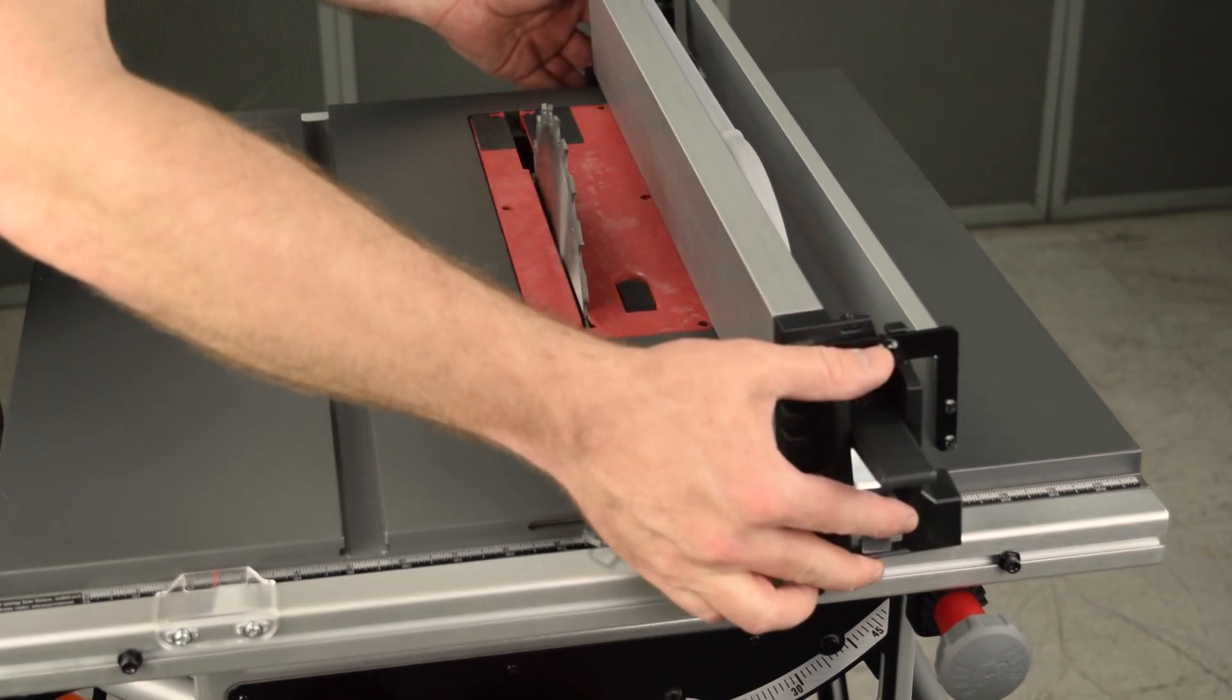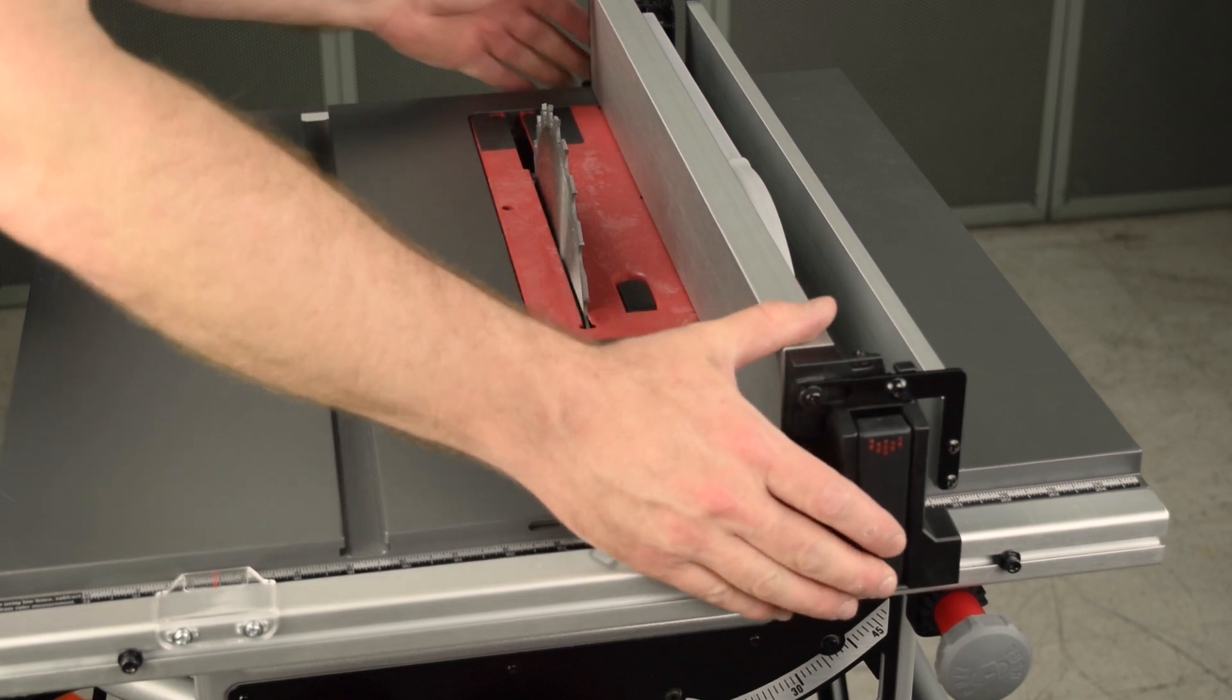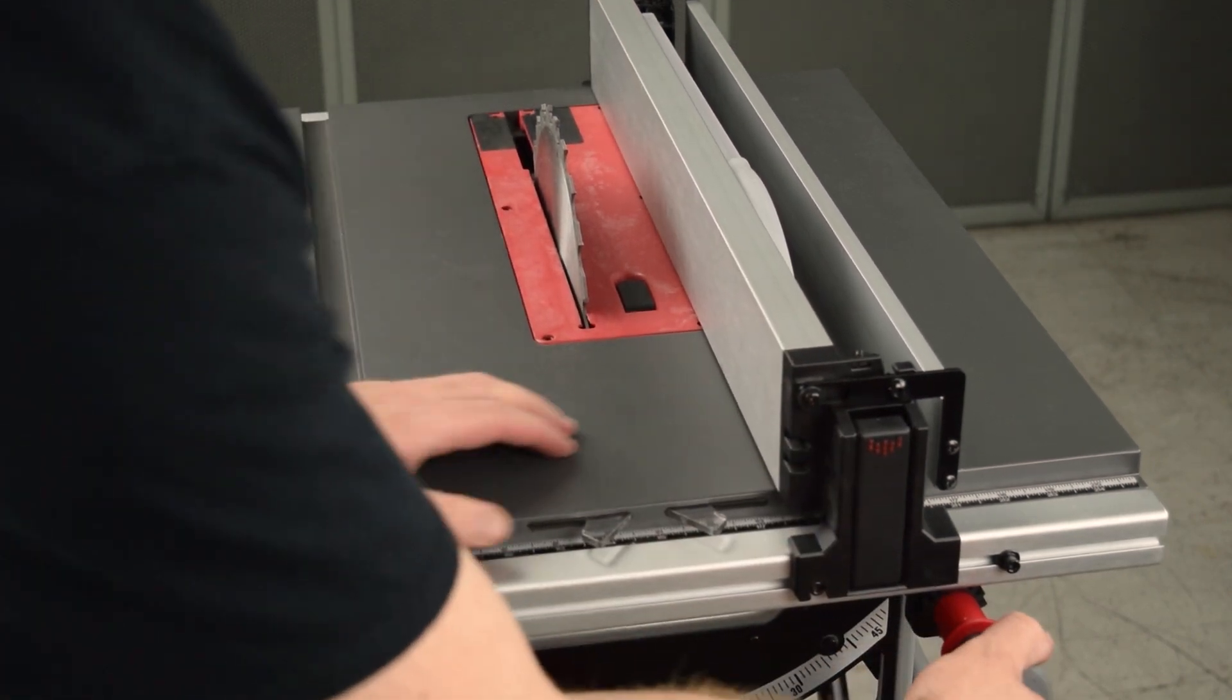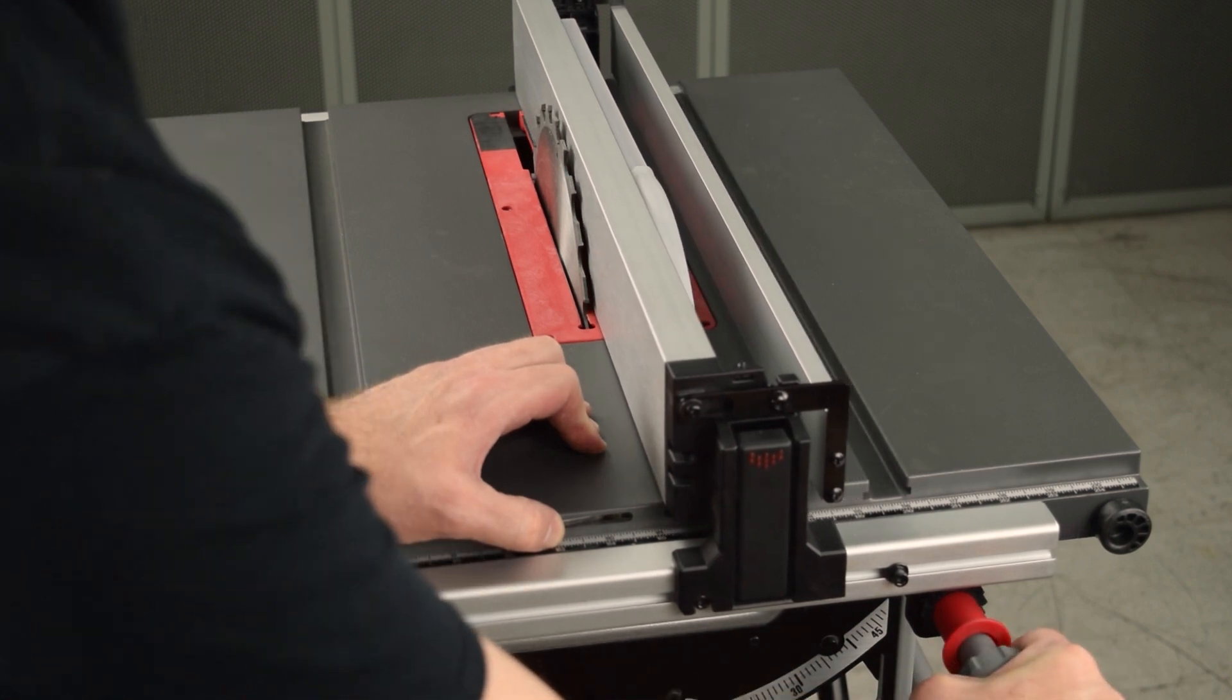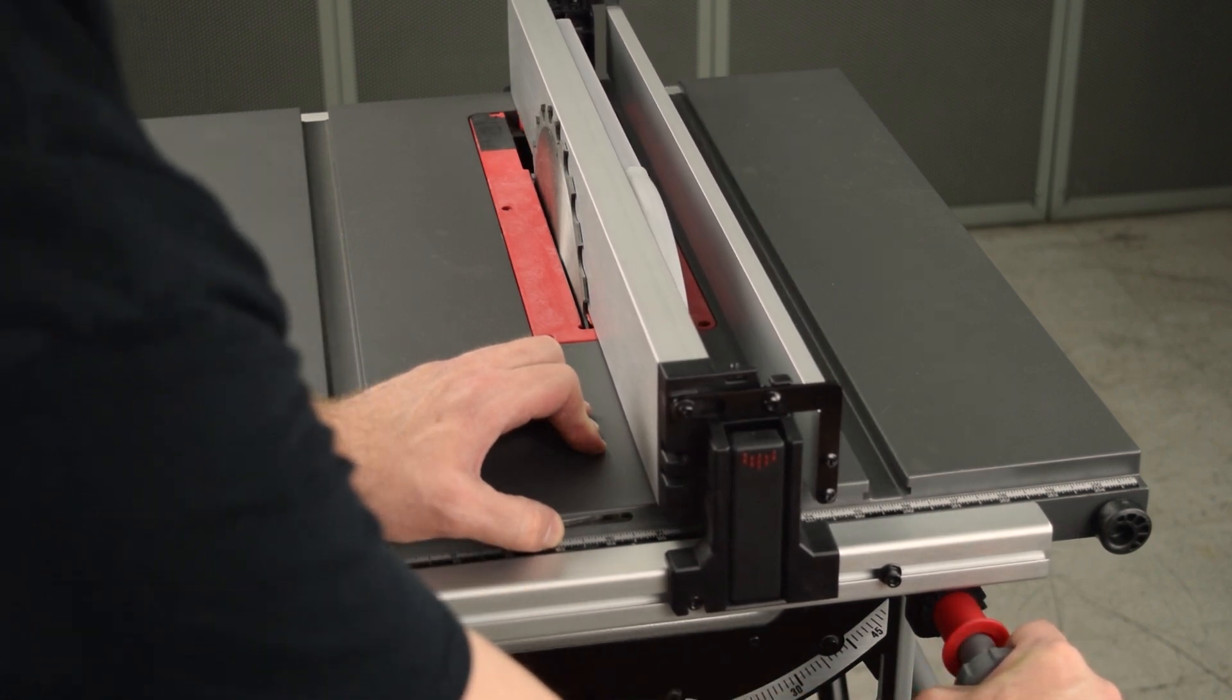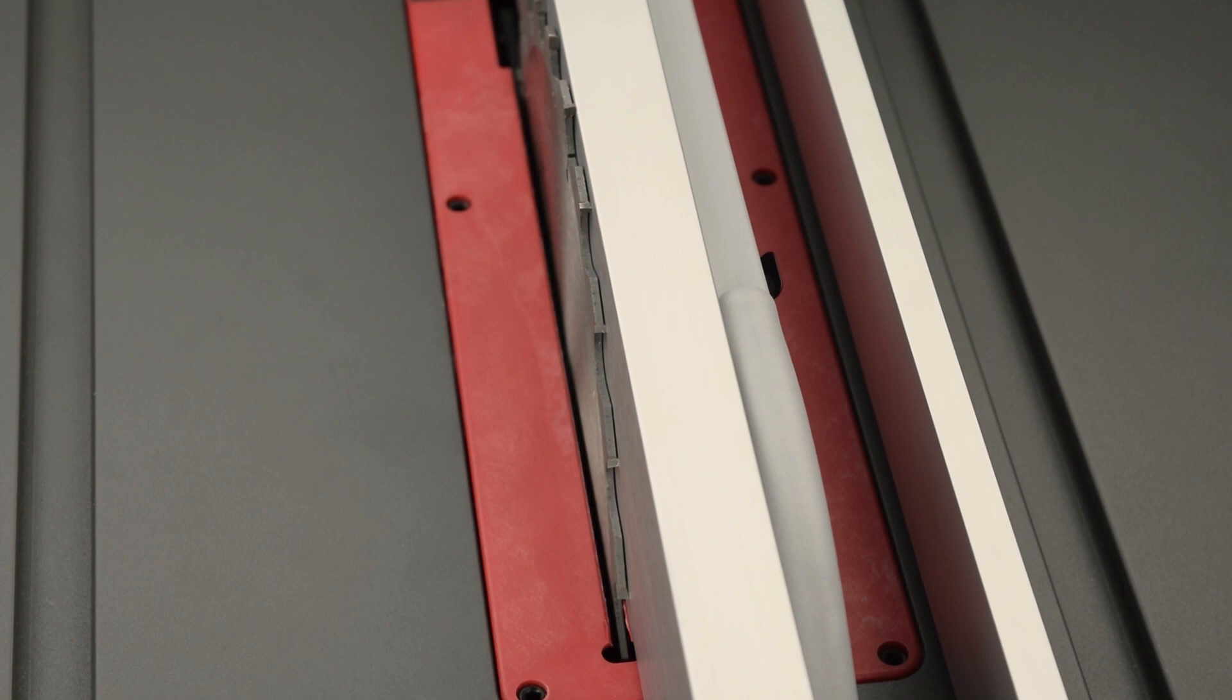Mount the rip fence on the lugs closest to the blade. Retract the fence stops, and then set the rip fence so that it lightly touches the blade. Use a light touch here. Do not deflect the blade.